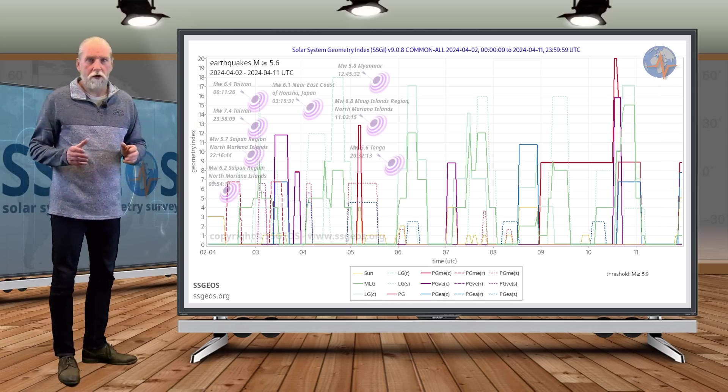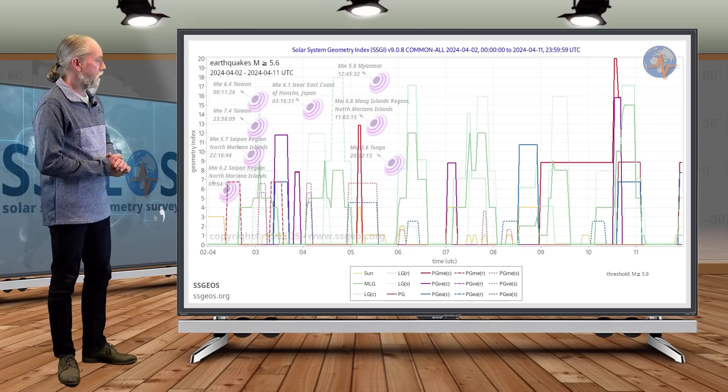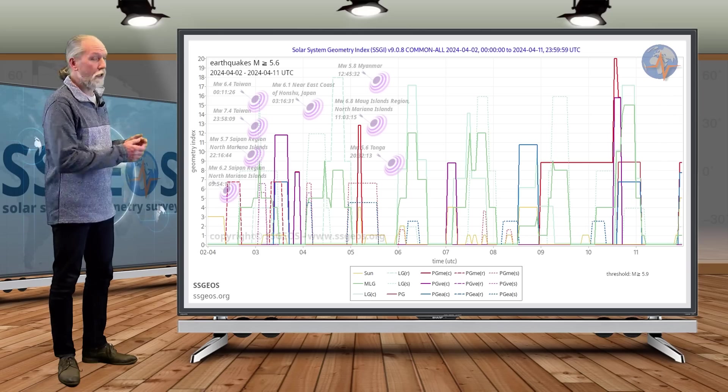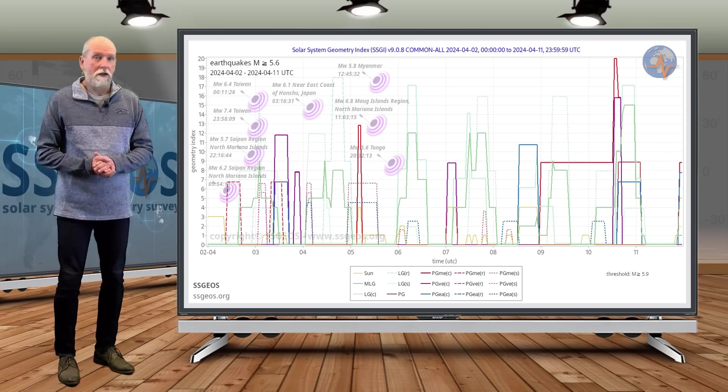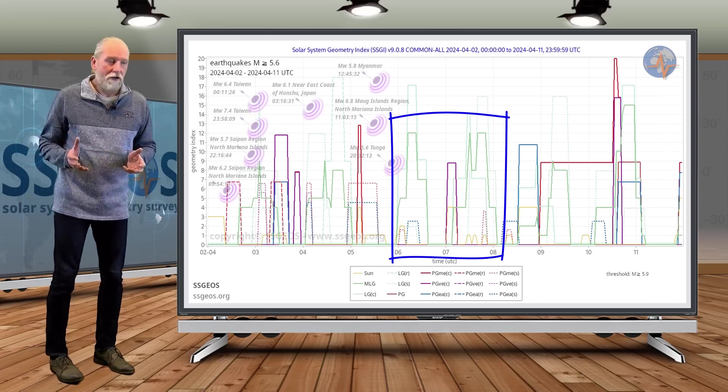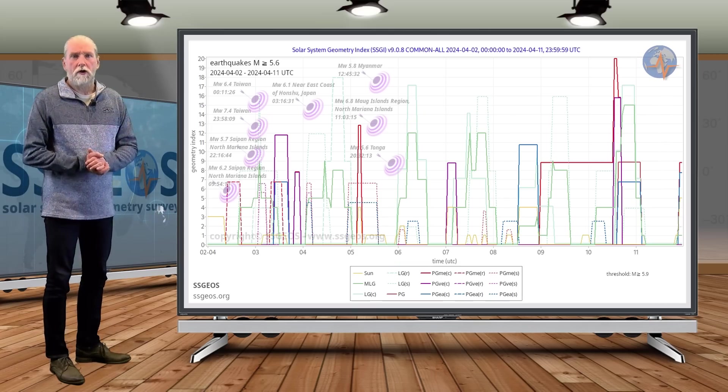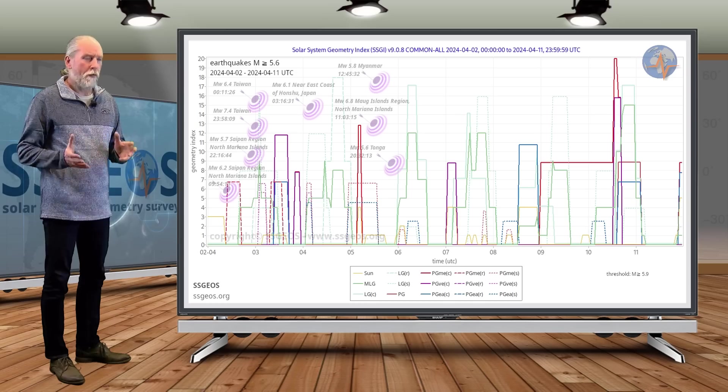Yesterday no larger tremors. Again, this is 5.6 and larger. And again 6 and also today relatively quiet. But we do have this lunar geometry, the lunar conjunctions yesterday and today. And that is probably going to trigger some stronger tremors. Not necessarily big.